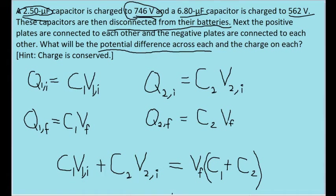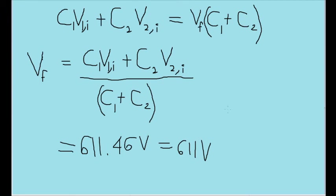for V sub 2i to be specific. Remember to use SI units and to convert these measurements of microfarads into measurements of farads by multiplying the capacitances by 10 to the negative 6. If you do this correctly, you should end up with a potential difference of 611.46 volts, or, if we're going to round this to the proper number of significant figures, 611 volts.